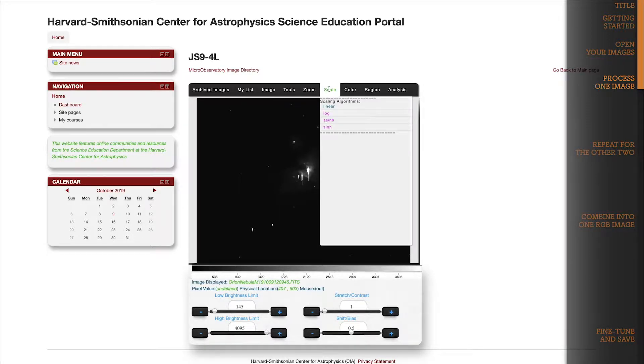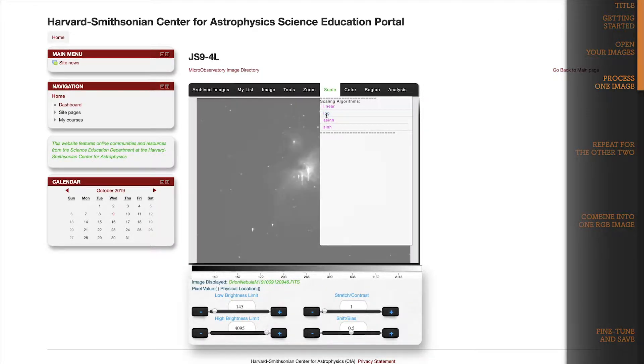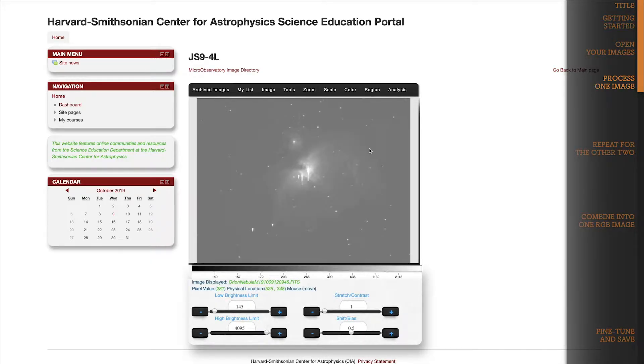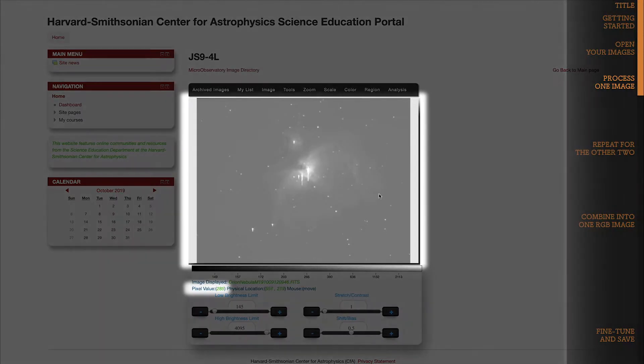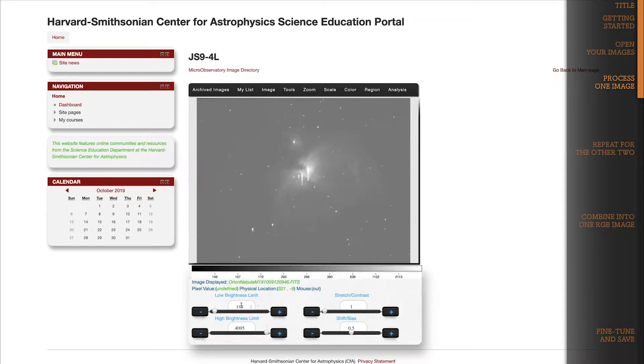First, I'll change the scale to Log because the Orion Nebula is a pretty dim image. Second, I'll set the low brightness limit to the lowest pixel values that I'm seeing in the background sky in the image. It looks like it's generally around 275 to 280. I'll plug 278 in.